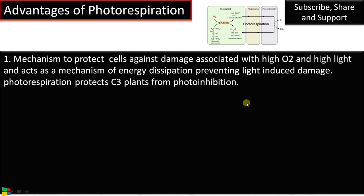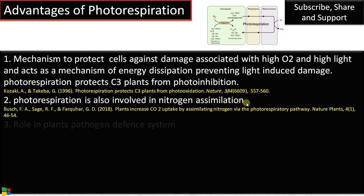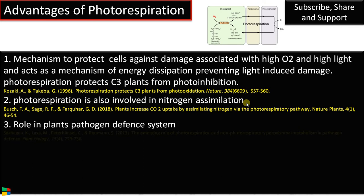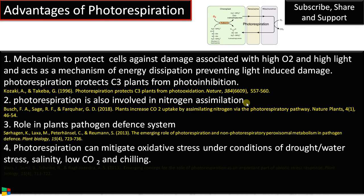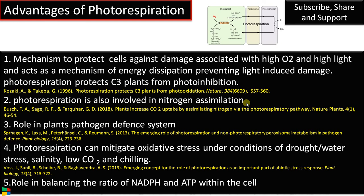Photorespiration protects C3 plants from photo-inhibition, or high light intensity that causes damage to the photosynthetic apparatus. Second, photorespiration is also involved in nitrogen assimilation. It also has a role in the plant's pathogen defense system. Recent reports suggest it has a role in mitigating oxidative stress under drought, water stress, or salinity conditions. Finally, it has a role in balancing the ratio of NADPH and ATP within the cell.